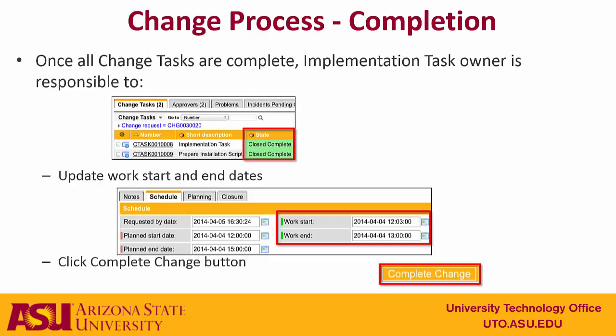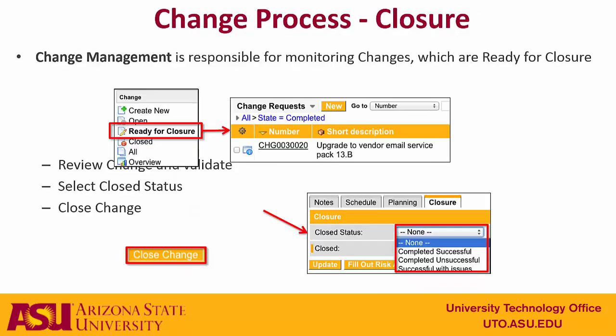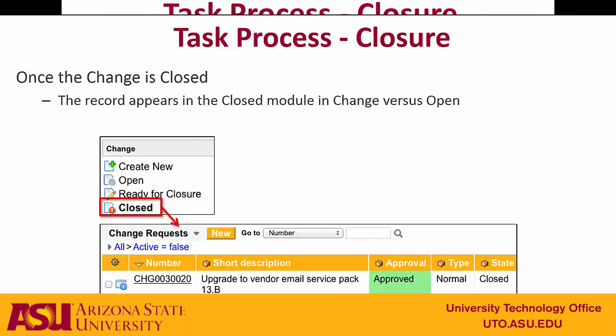Once all of the tasks associated with a change record are done and are marked close complete, then the owner of the change record will go in, set the actual work start and end date, and click on the complete change button in the change record. The change management group will find that record in the ready for closure list. They'll review it, put their own notes in the closure tab, and then click close change. Once they do that, your change record will appear in the closed list from the change application.